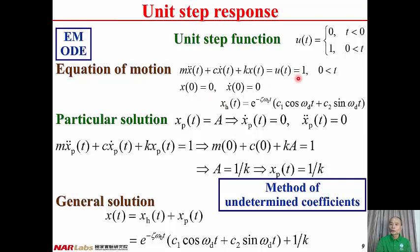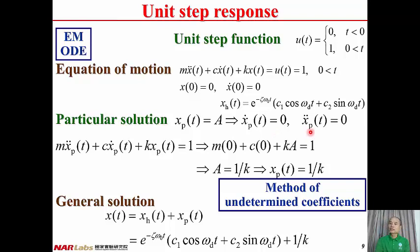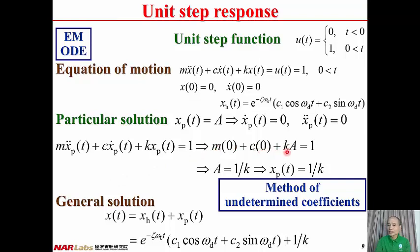Now we find the particular solution. Because the forcing function equals one, a constant, we use the method of undetermined coefficients and assume Xp(t) = A. Then Xp-dot(t) = 0 and Xp-double-dot(t) = 0. Substituting into the equation of motion gives M·0 + C·0 + K·A = 1, so A = 1/K. Therefore the particular solution is Xp(t) = 1/K.